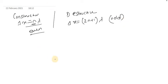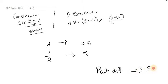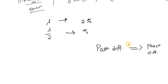A key relationship: if the path difference is lambda, then the phase difference doubles. If the path difference is lambda by 2, then the phase difference is pi. So whenever a path difference is given, we convert it to phase difference by multiplying by 2 and replacing lambda with pi. That gives us the phase difference.